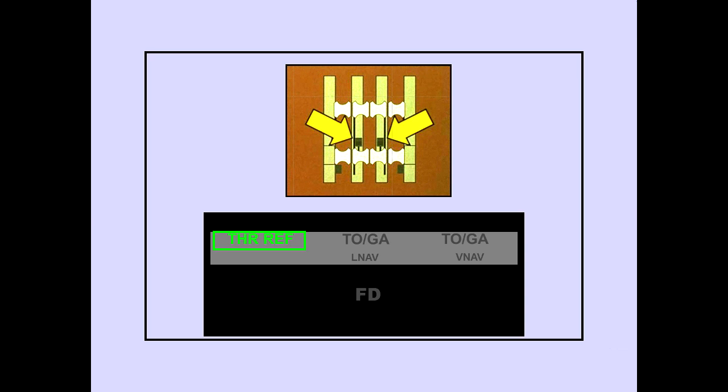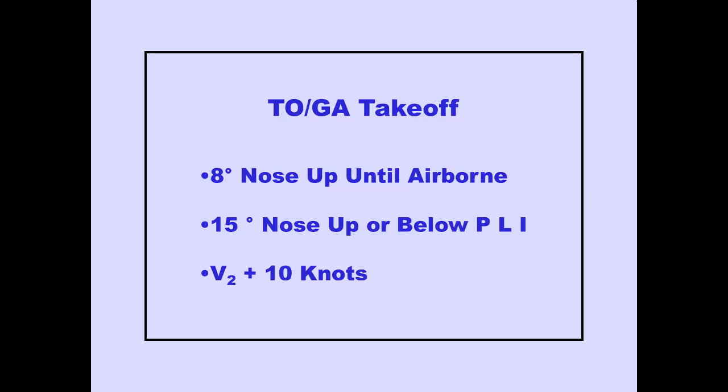When ready for takeoff, pushing a TOGA switch enunciates thrust reference on the PFD and the thrust levers advance to the pre-selected thrust. Thrust functions will be discussed in the Autothrottle module. During takeoff, the TOGA pitch mode commands 8 degrees nose-up until airborne. When airborne, pitch commands change to the lesser of 15 degrees nose-up or slightly below PLI.